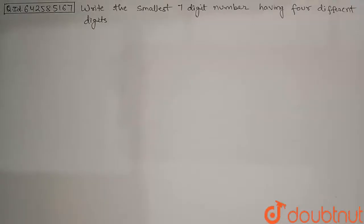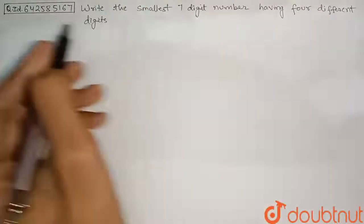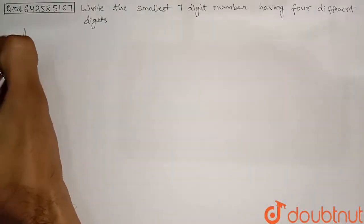Hello students, let's discuss the question. Write the smallest 7 digit number having 4 different digits. So let's begin with the solution of this question.